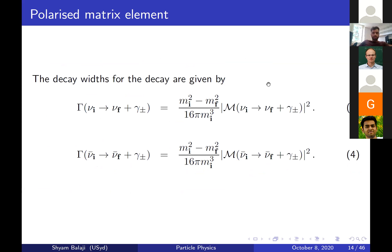Beyond computing the amplitude, to obtain an observable we need the polarized decay width. We are interested in the neutrino and anti-neutrino decays into the respective polarizations of the final state photon, introducing the appropriate phase space factor between the initial and final neutrino masses.